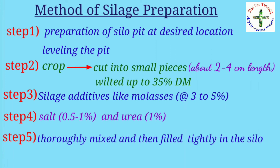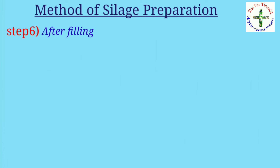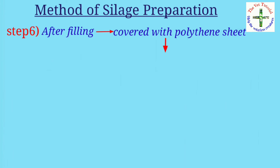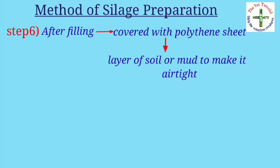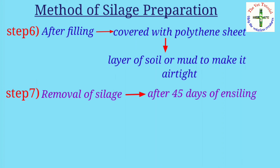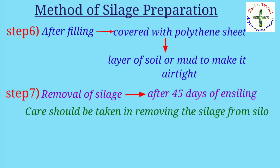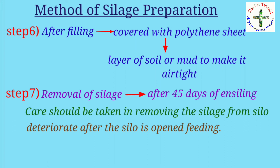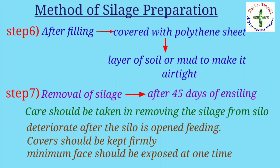Sixth, after filling, the silo should be covered with a polythene sheet followed by a layer of soil or mud to make it airtight. Removal of the silage can be done after 45 days of ensiling for feeding animals. Care should be taken when removing silage — it should not be allowed to deteriorate after the silo is opened, and the feeding cover should be kept firmly in place with minimum face exposed at one time.